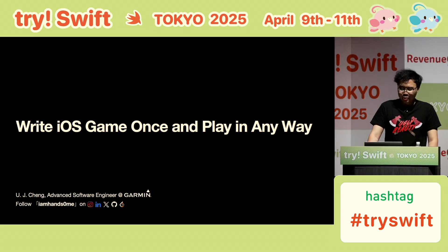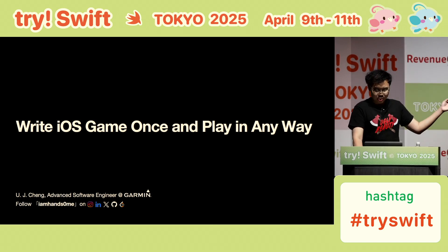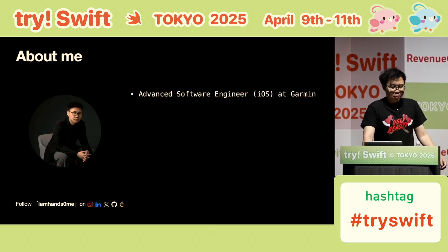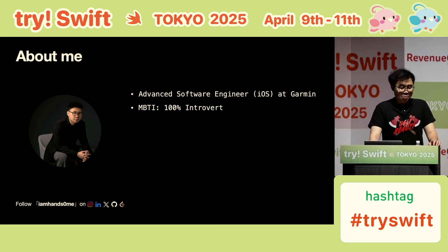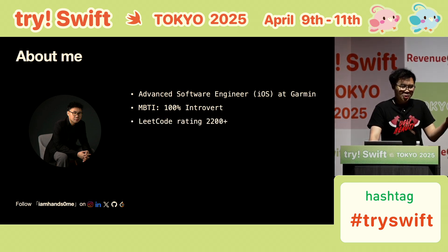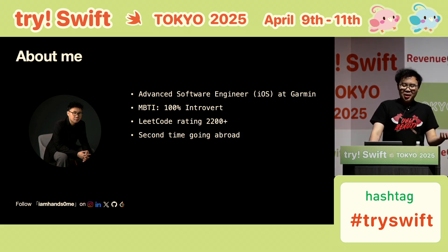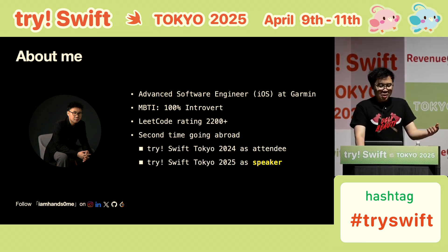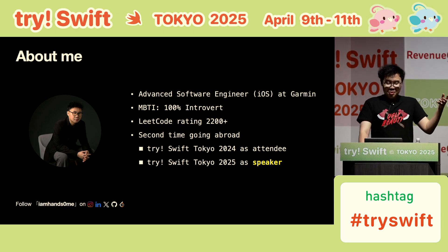Hello everyone. Today I want to talk about my side project. You can call me UJ and find me on this social media. More about me — I work at Garmin in Taiwan. I'm 100% introverted according to MBTI, so I love solving problems alone. It's just my second time going abroad, both times for iOSConf Tokyo — but this year as a speaker. Very grateful.